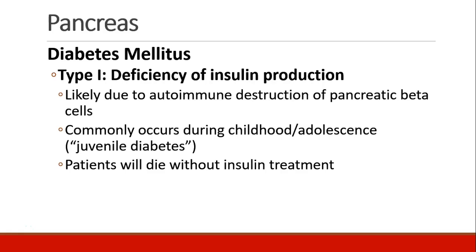Diabetes mellitus is usually categorized as type 1 or type 2. Type 1 diabetes is due to a deficiency of insulin production, most commonly due to autoimmune destruction of pancreatic beta cells. Since this often occurs during childhood or adolescence, it used to be called juvenile diabetes. These patients will die without insulin treatment because they cannot transport glucose into their cells.